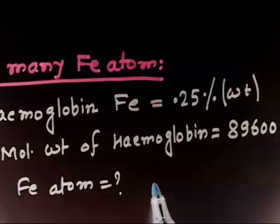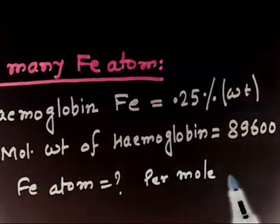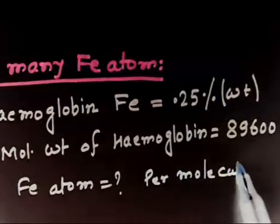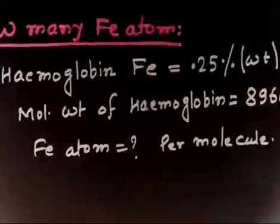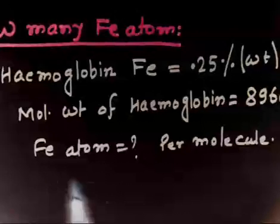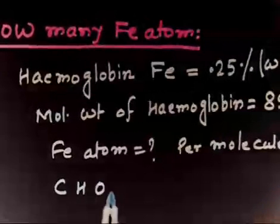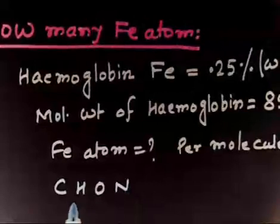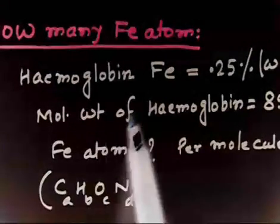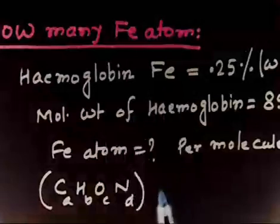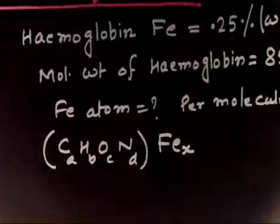Per molecule of hemoglobin, we have to find how many iron atoms there are. Hemoglobin can contain carbon, hydrogen, oxygen, nitrogen — let us say A, B, C, D — and it can also contain iron. Let us say there are X atoms of iron (Fe). So this will be the formula of hemoglobin.